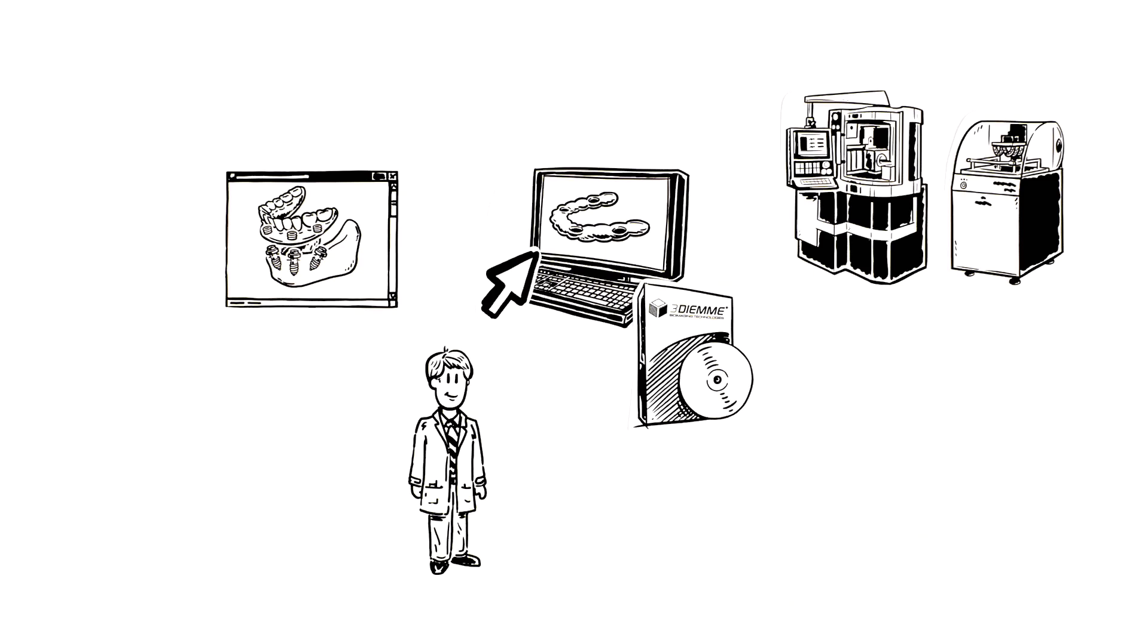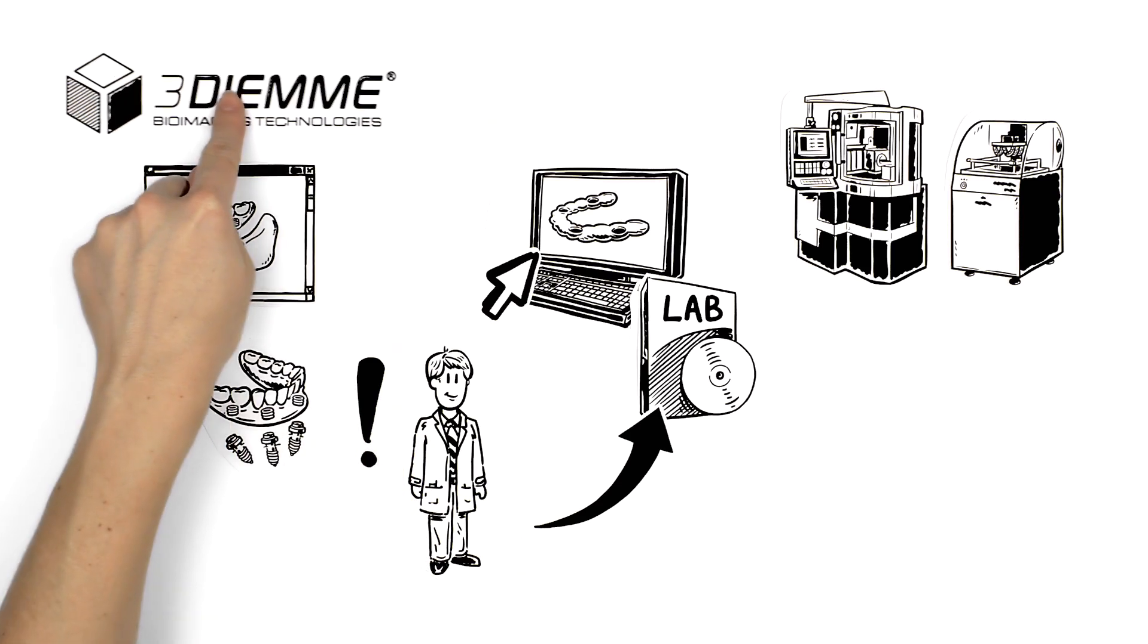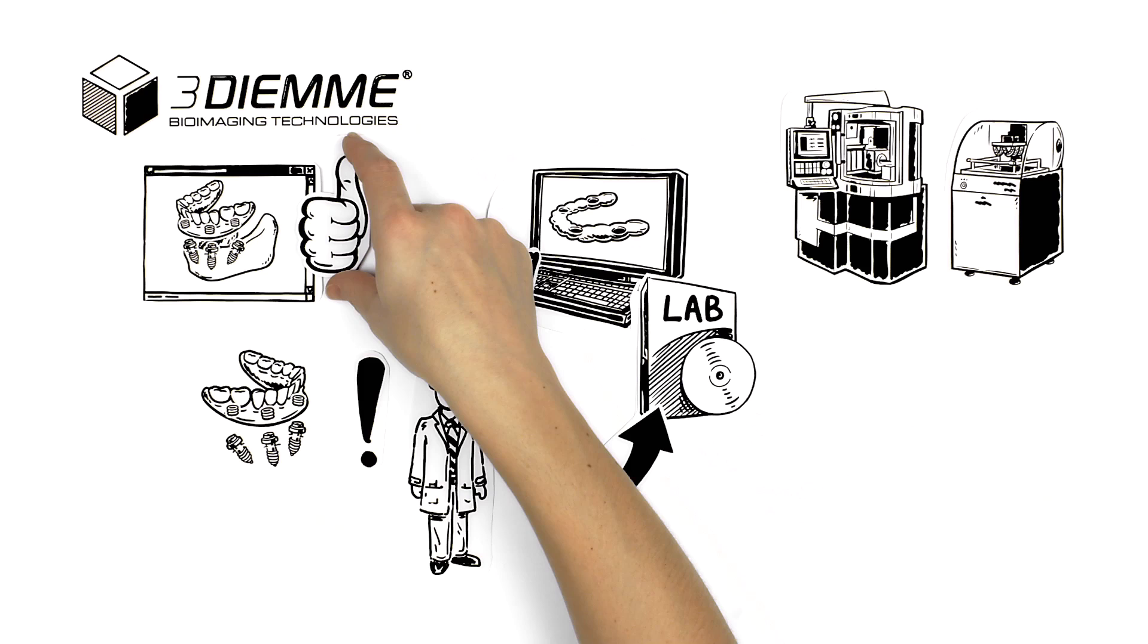Moreover, using his laboratory modeling software, the technician can immediately prepare the provisional prosthesis based on the same planning. He will also have the option to send the plan to 3DM to manufacture the surgical guide and the 3D model as service.